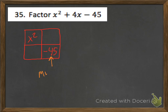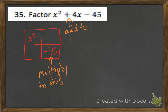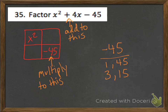Now I need to find two numbers that multiply to negative 45 and add to that middle term, a positive 4. So first I need to factor negative 45. The factors of negative 45 are 1 and 45, 3 and 15, and 5 and 9.